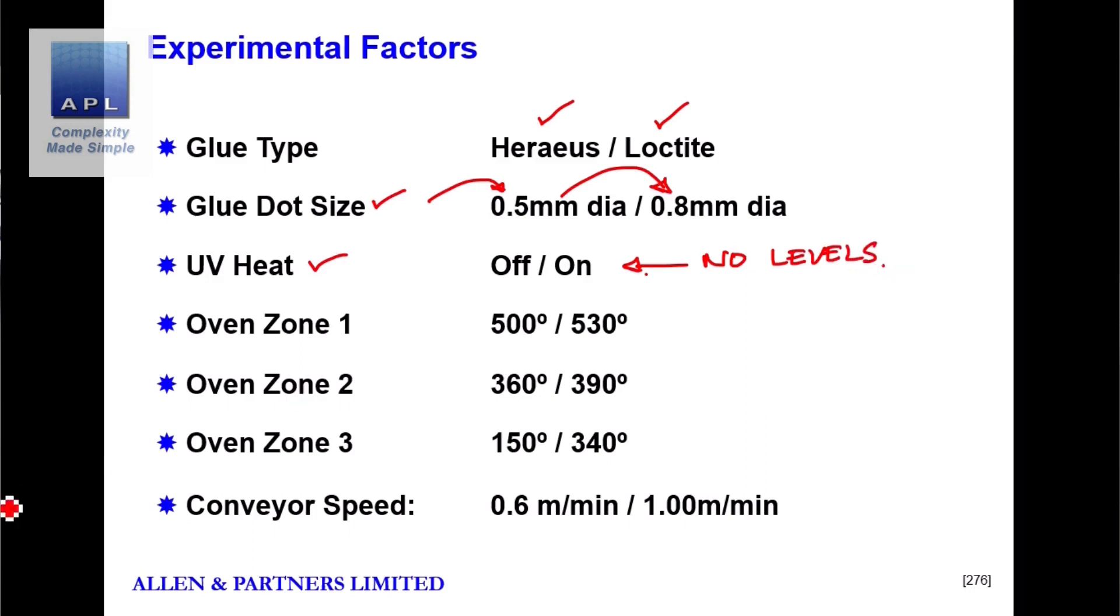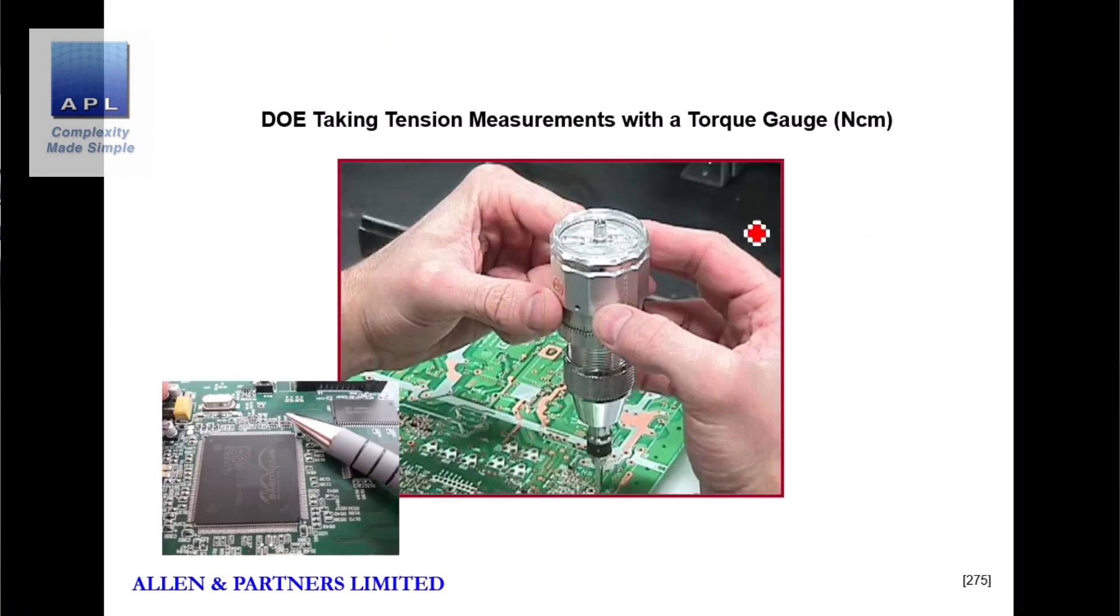Zones. We've then got three temperature zones. One, two and three. We've selected high and low temperatures for each. And then finally, we've got conveyor speed. So maybe if we go faster or slower through the oven, then maybe we'll get a better bond. So there are the seven variables. Our output is glue strength. And you can see in this picture, we have this little meter where we can prize the component off the board. And we can measure how strong the glue strength was as we did that.